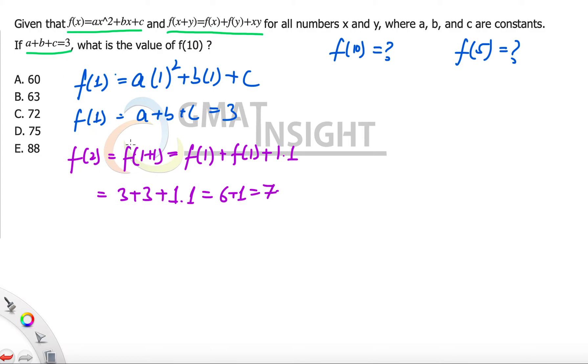So now we have got f(2). Using f(2), now we would like to find out the value of f(3). And f(3) can be written as f(1+2), which can further be written as f(1) + f(2) + 1×2. The value of f(1) is 3, the value of f(2) is 7, plus 1×2. So we have 12.